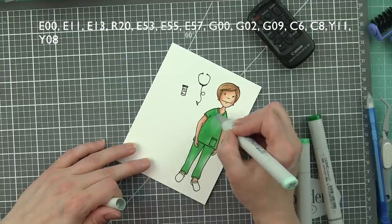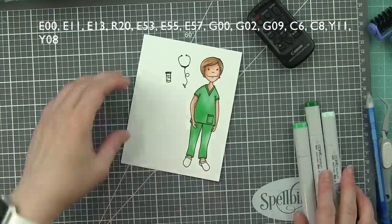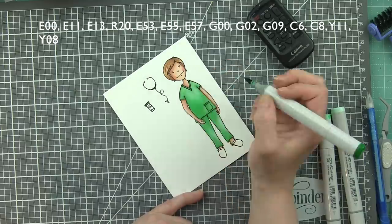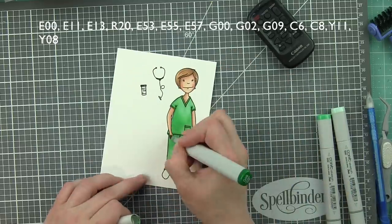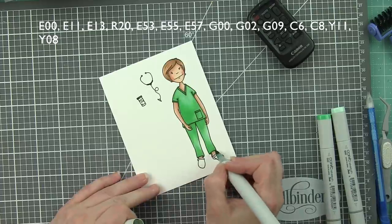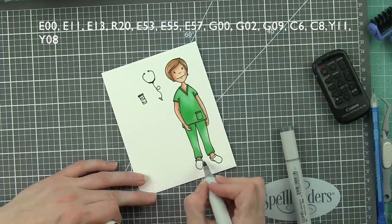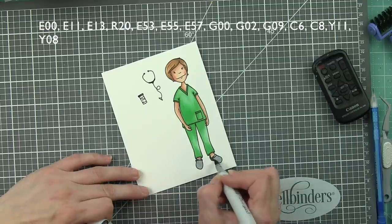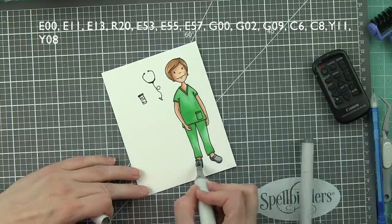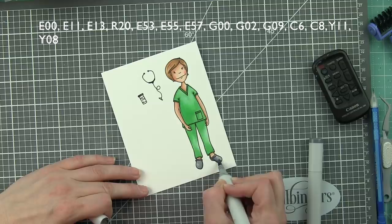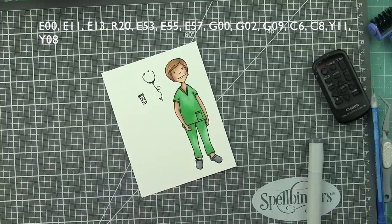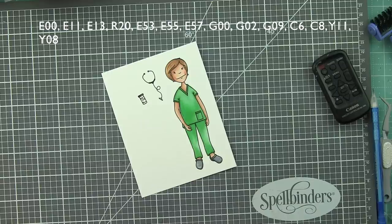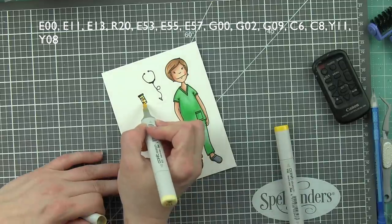For her shoes, I did cool grays again. Another example of kind of keeping with the markers that I already had out. You could color those anything you want to color. These are C6 and C8 with colorless blender at the toes to lighten the area where the toes naturally will be in the shoes. The pill bottle, I just went with, I think, Y11, 8, and 08. Really fast coloring. It's a small little image.